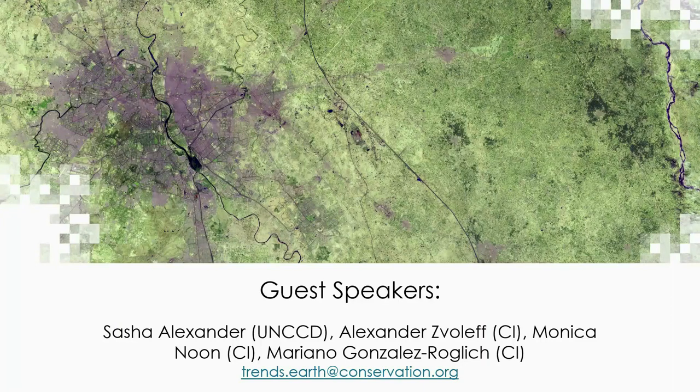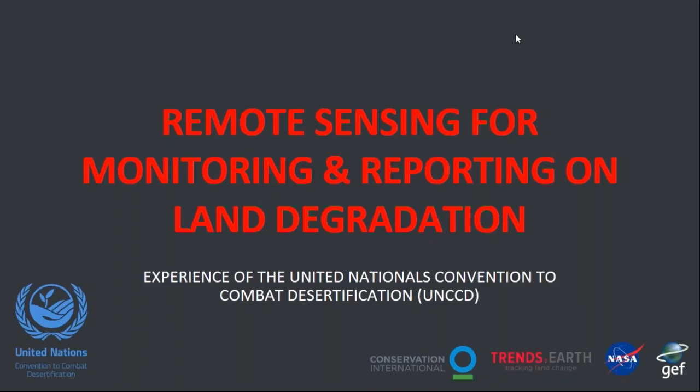First we'll be hearing from Sasha Alexander from the UNCCD. The United Nations Convention to Combat Desertification, or UNCCD, is the custodian agency for SDG Indicator 15.3.1 — the proportion of land that is degraded over total land area. This means that we collect the data at the national level and report to the UN High Level Political Forum on Regional and Global Progress.